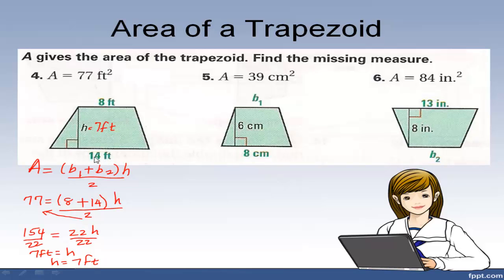You can check: add the bases to get 22, times 7 divided by 2 is 11 times 7, which gives you 77. It checks out.